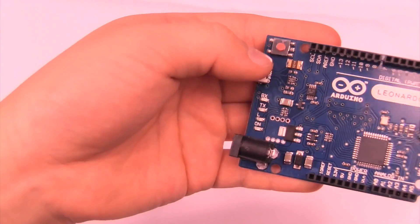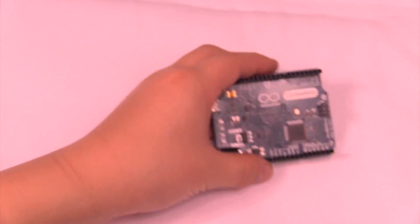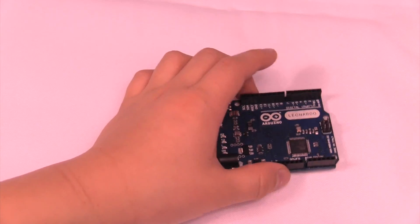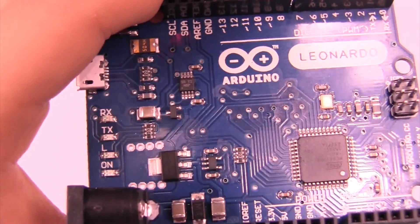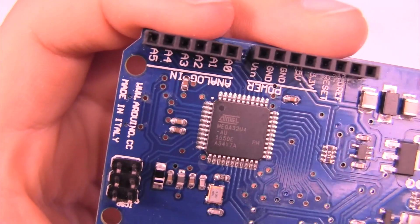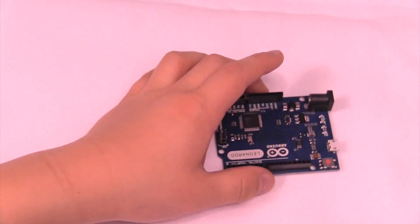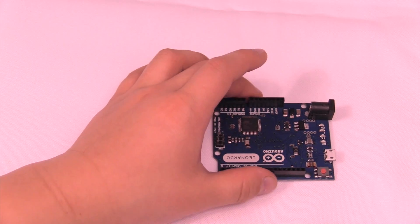One cool feature with the Leonardo is it's a single MCU chip board. If you look at the writing on the chip, it's an ATmega 32u4, which has built-in USB support. So it just uses one chip to handle everything and it also has one more PWM, and that's pin 13 is also PWM.